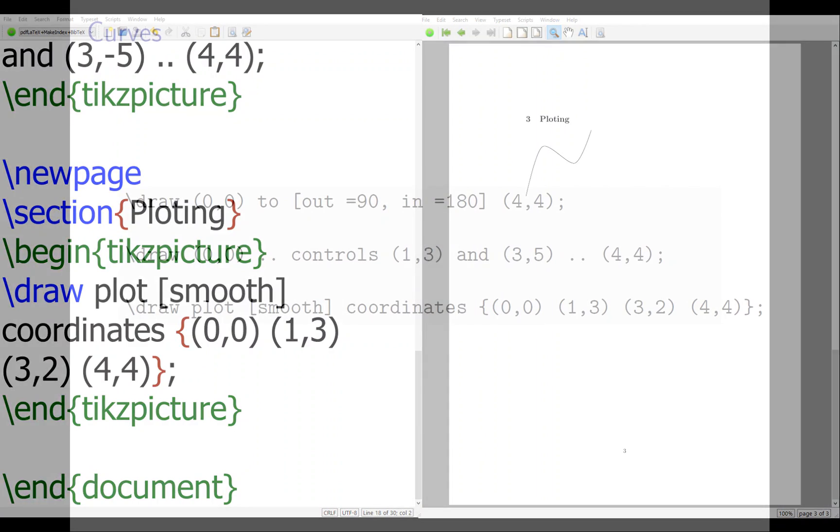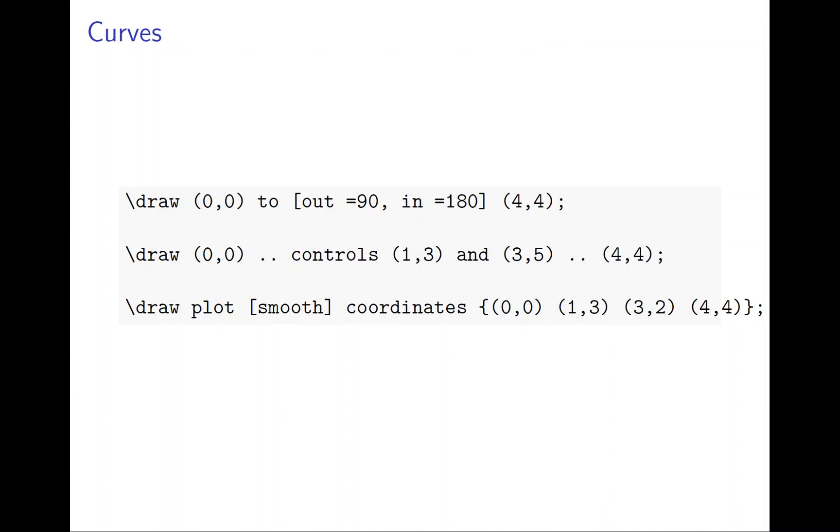To summarize, we have three ways to draw a curve. So, you give the out coordinate, in coordinate. Or, you have a two control Bezier curve. Or, you have give me all the coordinate you want to pass through. It will try to smooth out using the program. So, they're rather easy to draw. They're more complicated way to draw a curve. But I think these three are sufficient for most purpose.